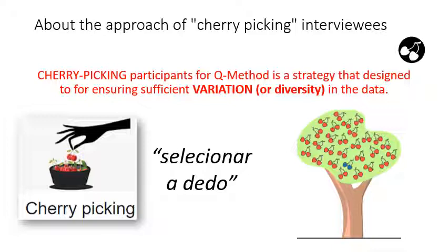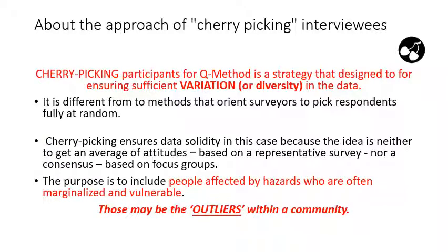You can be selective about your food, your boyfriend or girlfriend, the clothes that you wear. Cherry picking is when you have, for example, a cherry tree full of red cherries and there's one that is blue — you're more bound to select that blue cherry because it is different from the others. In Portuguese, we say 'selecionar a dedo.' Cherry picking, as part of the Q method, is a strategy designed to provide sufficient variation in the data.